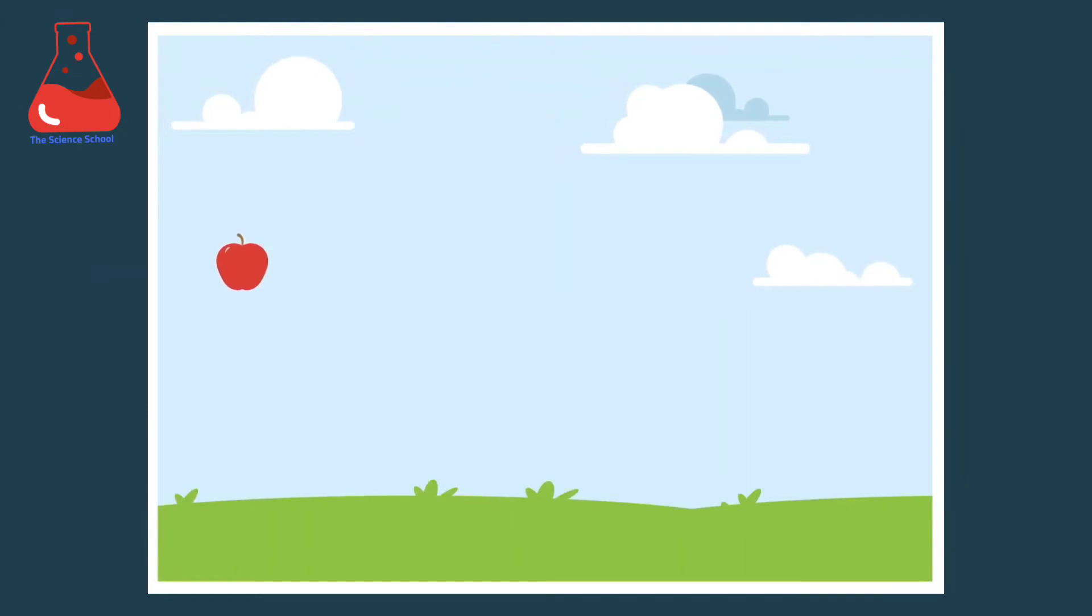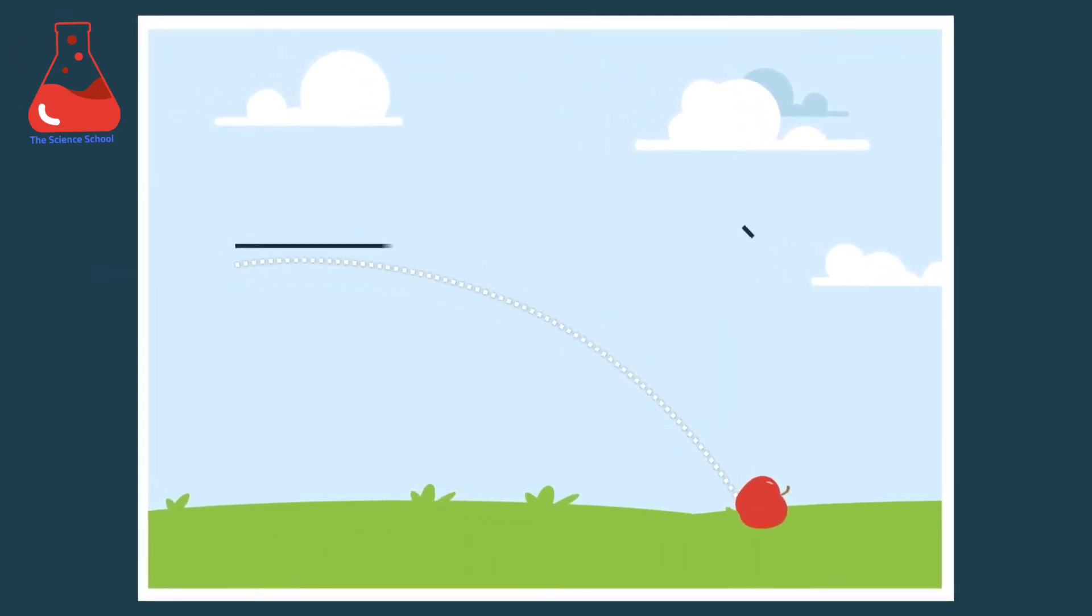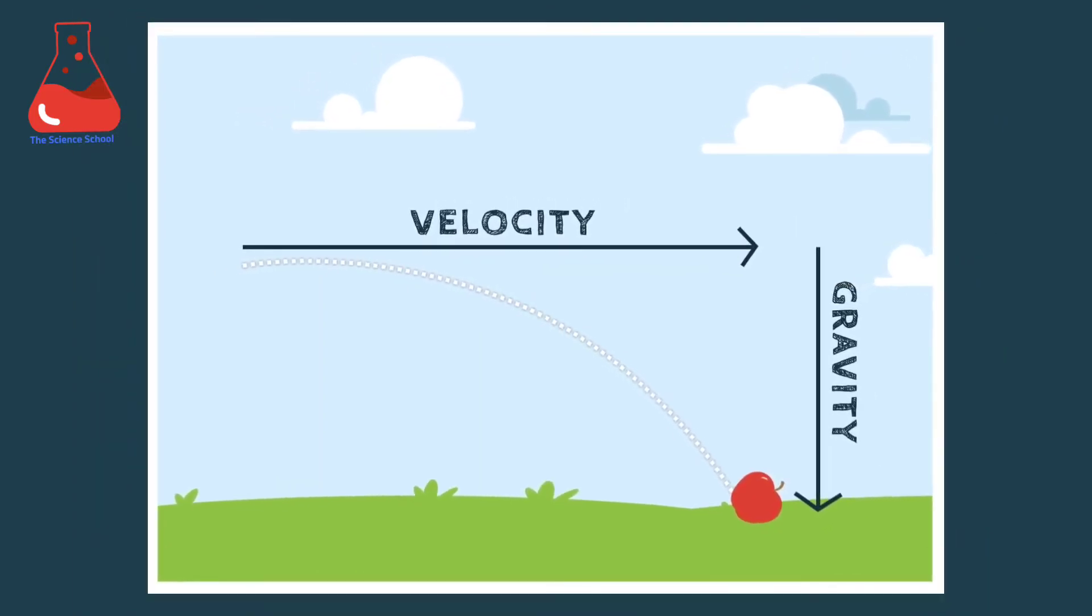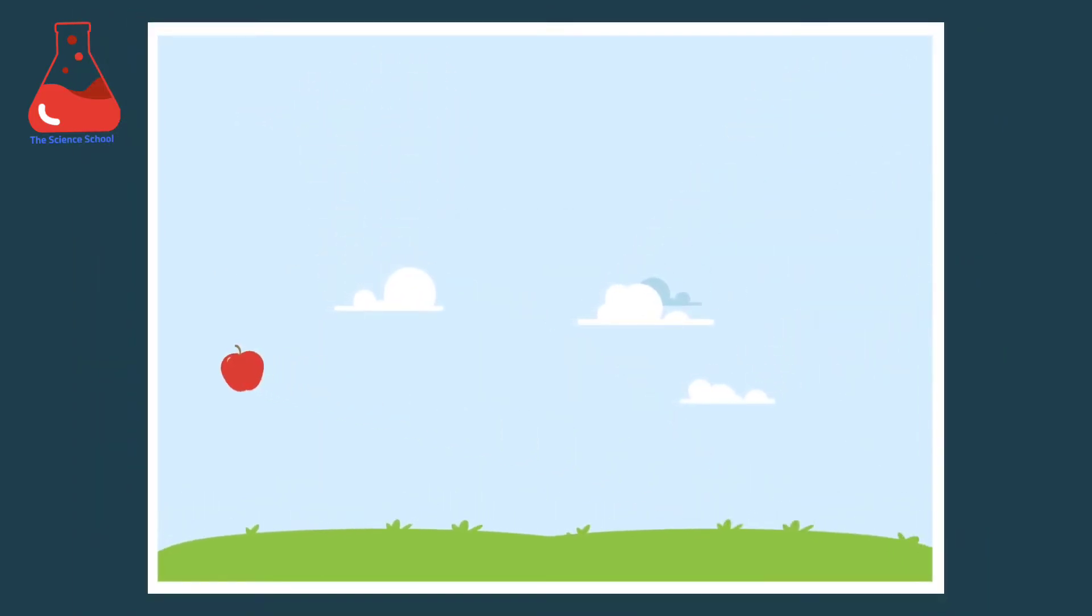Imagine you throw an apple. You give it an initial velocity but gravity is continuously pulling it down. If you throw the apple a little bit faster it will just take a longer path, the velocity moving forward and gravity pulling it down.